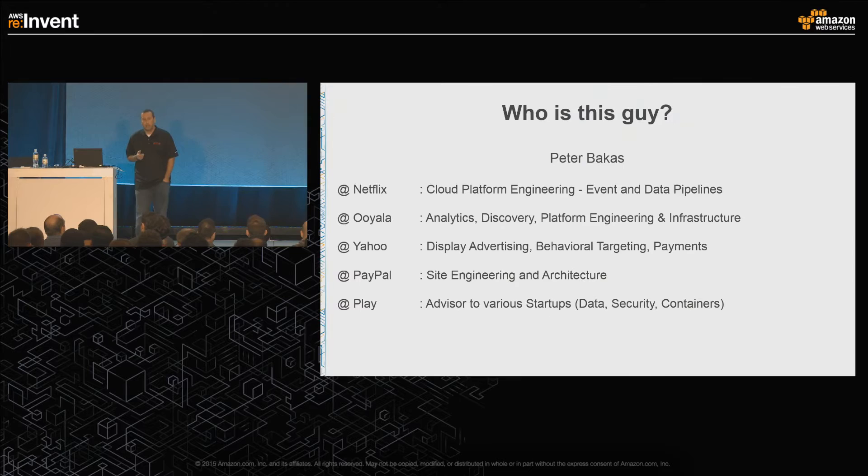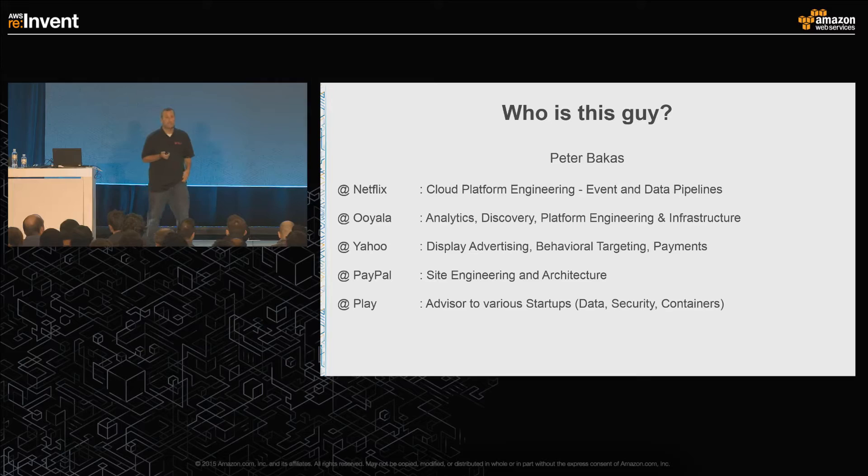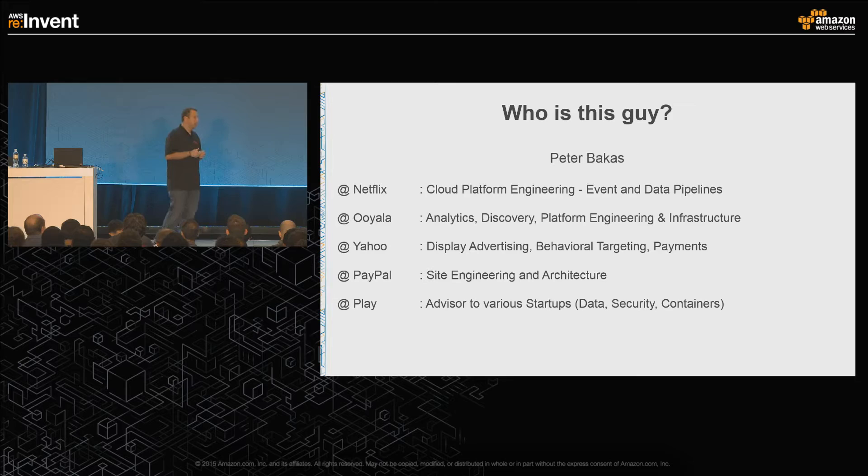A little bit about me. My name is Peter Baucus. I lead the event and data pipeline team at Netflix. Prior to Netflix, I spent time at Ooyala, Yahoo, and PayPal. I've worked in a variety of different areas, everything from payments to ad serving, behavioral targeting, and real-time analytics. My background primarily is distributed systems and large-scale infrastructure.